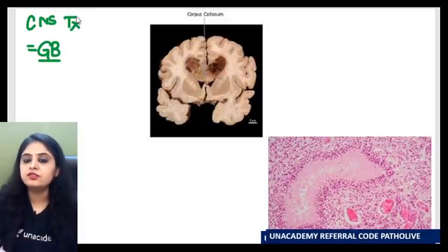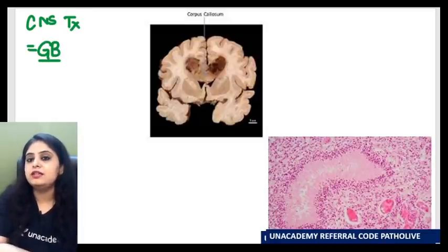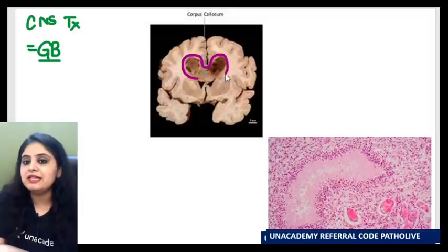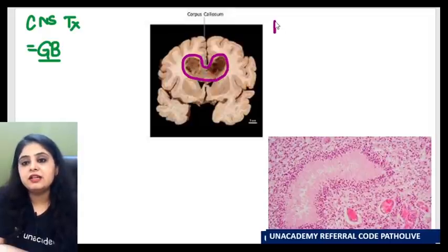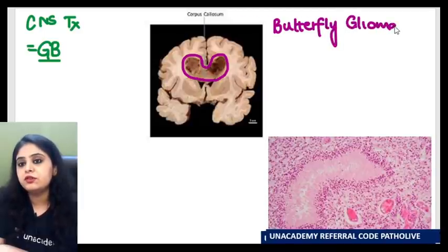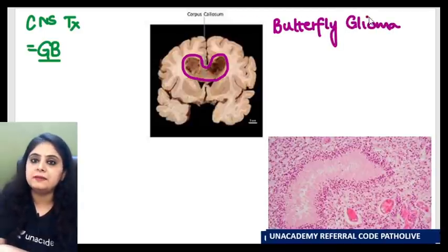First and foremost, what kind of tumour do I see on gross examination? I see a lesion over here and I can clearly see that it is crossing the midline — and that is the very classical shape we describe for this tumour. It is also known as the butterfly glioma because of its propensity to cross the midline.